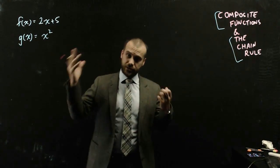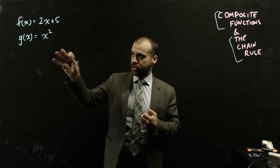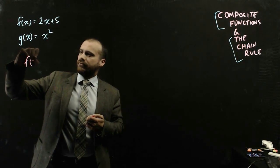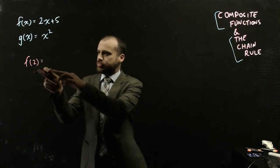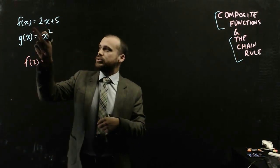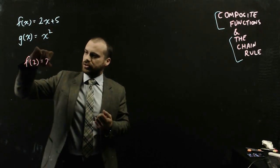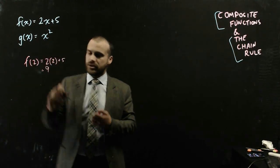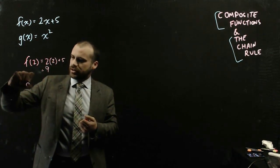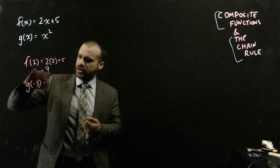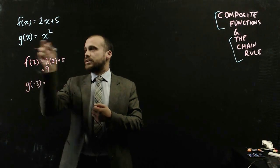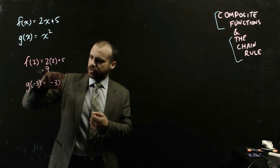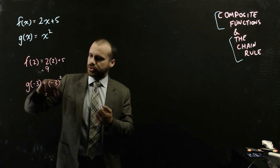Here are my two functions: f of x equals 2x plus 5, and g of x equals x squared. You already know how to do something like f of 2 — that just means putting 2 into the f of x function, so 2 times 2 plus 5 is 9. Or g of negative 3 means putting negative 3 into g, which is negative 3 squared, which is also 9.